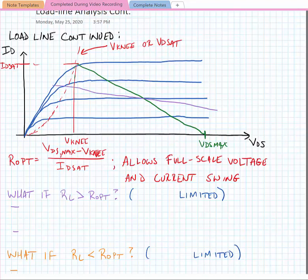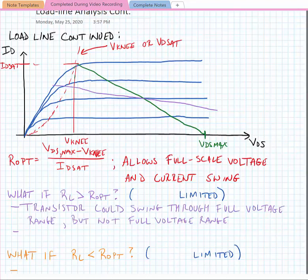I've just drawn a slope where R_L is greater than R_opt. What we can see immediately is that if we had this condition, the transistor's drain voltage would be allowed to swing through its maximum range but not the full current range. This might provide a higher voltage gain but would also provide a lower saturated output power, and they call this condition current limited.